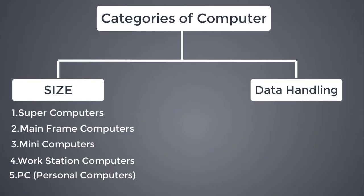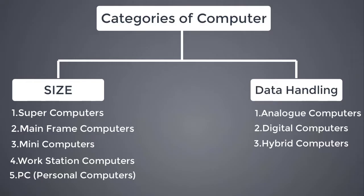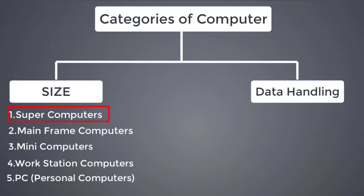Based on data handling, the categories are Analog, Digital, and Hybrid computers. Now, starting with Super Computers — these are the fastest computers, first developed by Roger Cray in 1976. They are used for Nuclear Scientific Research, Physics Simulations, Rocket Launching, and Weather Forecasting. They are very complex and powerful.